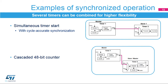Two examples illustrate synchronized operation. First, four timers can be simultaneously started using a mechanism that compensates for master-slave link delay, achieving cycle accuracy. Combining channels of timers 1 and 2 provides up to eight synchronized PWM channels. Second, a 48-bit timer is created by cascading three timers: timer 3's counter holds the least significant 16 bits, timer 2 holds bits 16 to 31, and timer 9 holds bits 32 to 47, with each using the update event from counter rollover as the clock for the next slave timer.